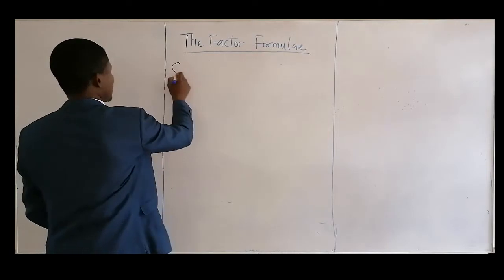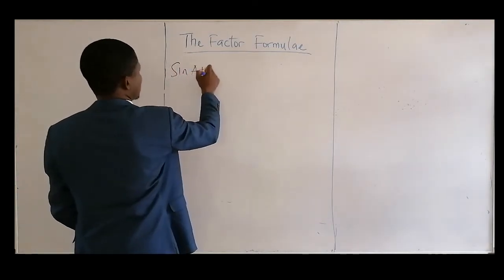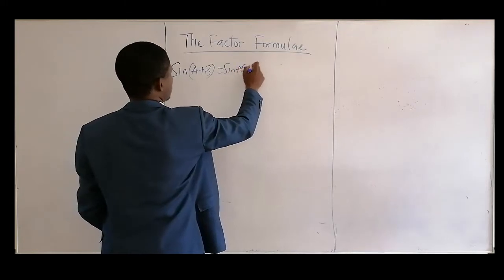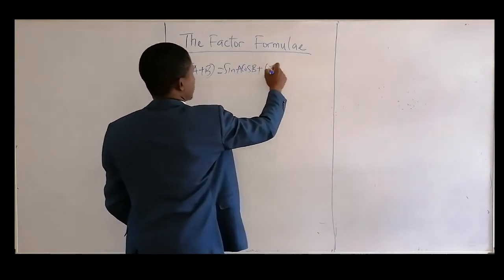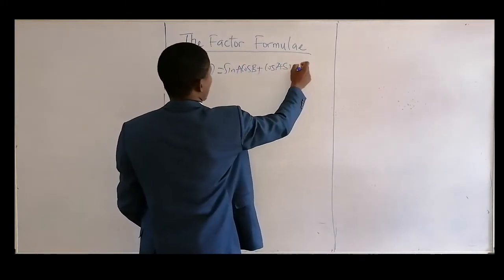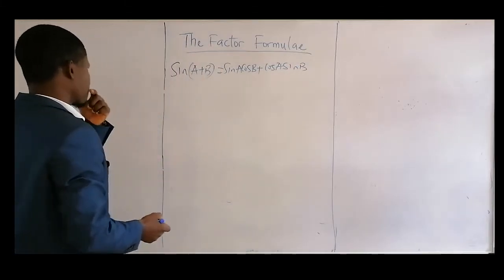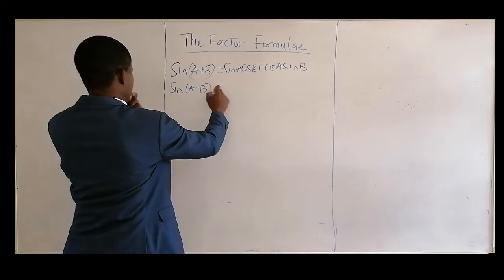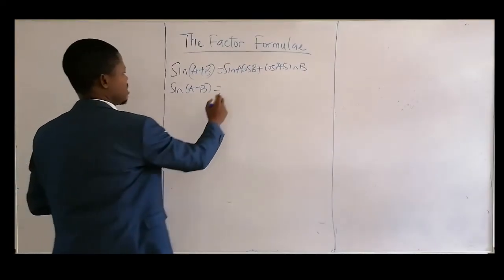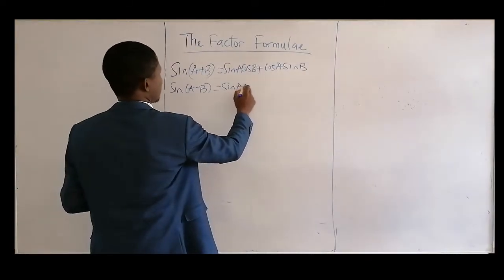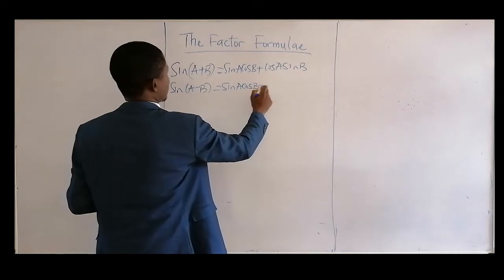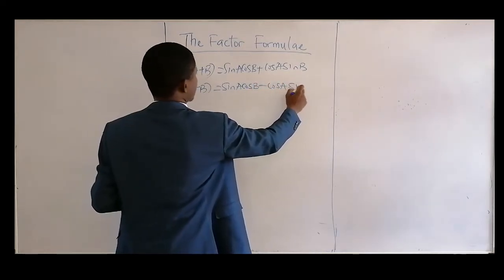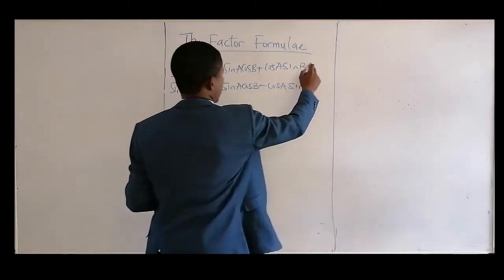After that we'll address questions. We established that sine(A + B) equals sine A cos B plus cos A sine B. We also said that sine(A − B) gives us sine A cos B minus cos A sine B.